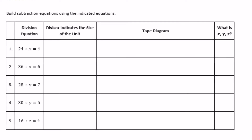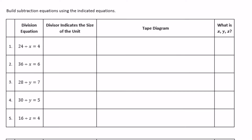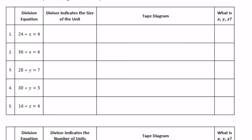6th grade module 4 lesson 4 problem set: build subtraction equations using the indicated equations. This first section, problems 1 through 5, is different from the second one because this first one is where the divisor indicates the size of the units. We have the dividend which is 24, the divisor which is X, and 4 which is the quotient. So the divisor means X is the size of the unit.